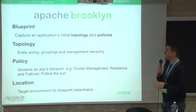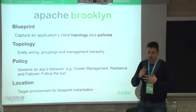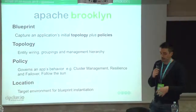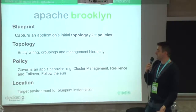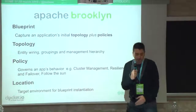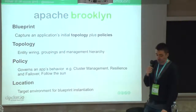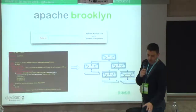Some of the main concepts for Brooklyn are the blueprint, which captures the application's initial topology plus the policies that govern this topology at runtime. A topology is basically a group of entities — software components — organized hierarchically or as a cluster. Policies govern the application behavior: we can have cluster management policy, resilience and failover policy, follow-the-sun, and it's quite easy to define new policies. Then there's the location, which is the target environment for blueprint deployment.